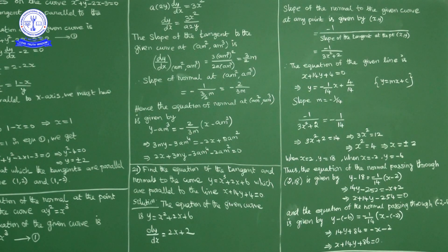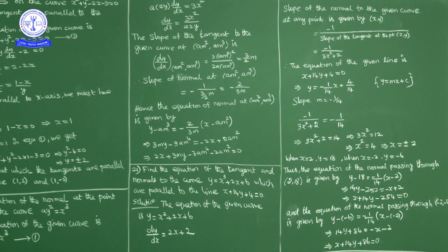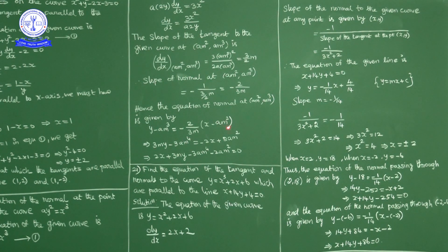To summarize Question 20: for the curve ay² = x³ at the point (am², am³), slope of the tangent is 3m/2, slope of the normal is -2/(3m). Equation of normal: y - am³ = (-2/3m)(x - am²), which simplifies to 2x + 3my - 3am⁴ - 2am² = 0.